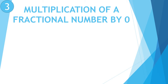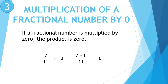Property number 3: Multiplication of a fractional number by 0. What is the value of 7 upon 11 multiplied by 0? Let's check. Do the multiplication: 7 multiplied by 0 upon 11 — 7 0s are 0 upon 11. And 0 divided by any digit, the answer is 0. So what you observed? If a fractional number is multiplied by 0, the product is 0.